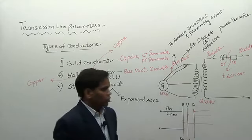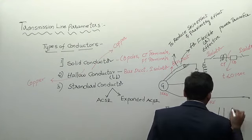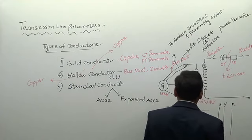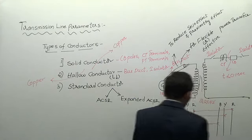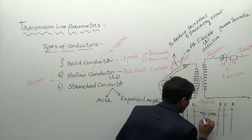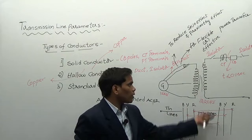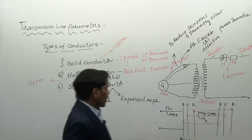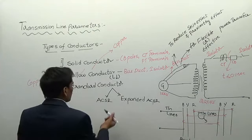At the bus bars, loads are connected through the transmission lines in R, Y, B phases. By using transmission lines, we can transfer power from generating stations to load centers, that is substations. In order to transfer power through the transmission lines, these transmission lines are made up of stranded conductor.